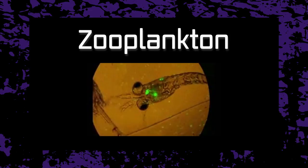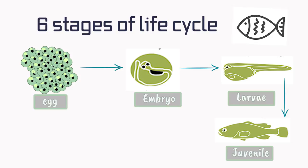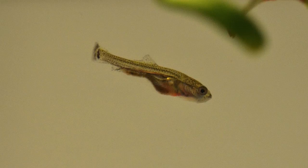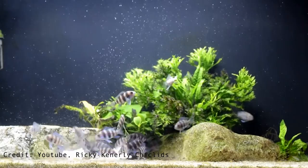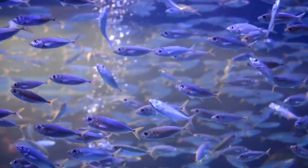The juvenile stage takes place once the fish looks like a miniature adult. Nearly all internal organs and fins have fully developed, although coloration may look different from the adult stage. During this phase, the young fish will require a high percentage of protein content in their diet, as they will literally live to eat and grow.